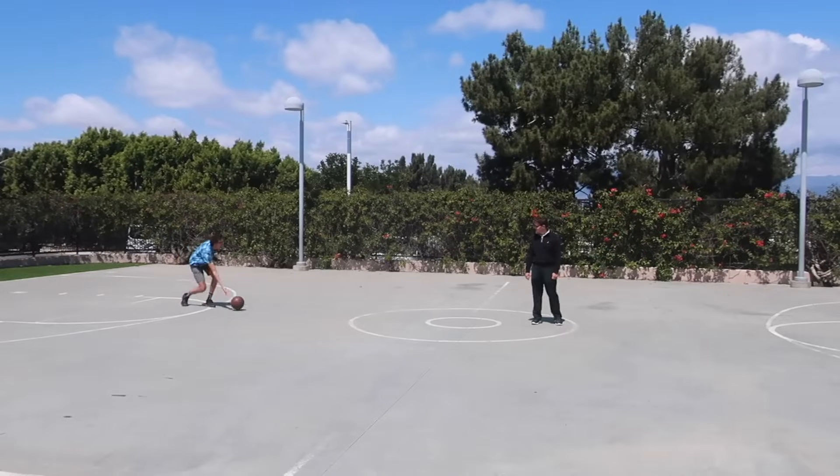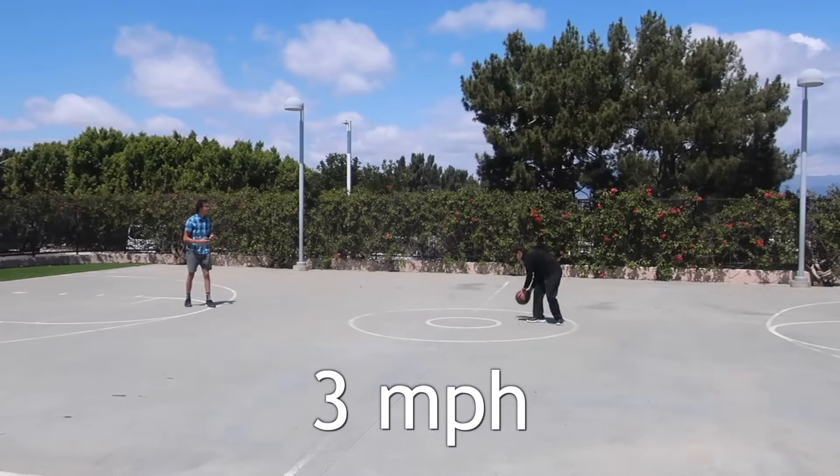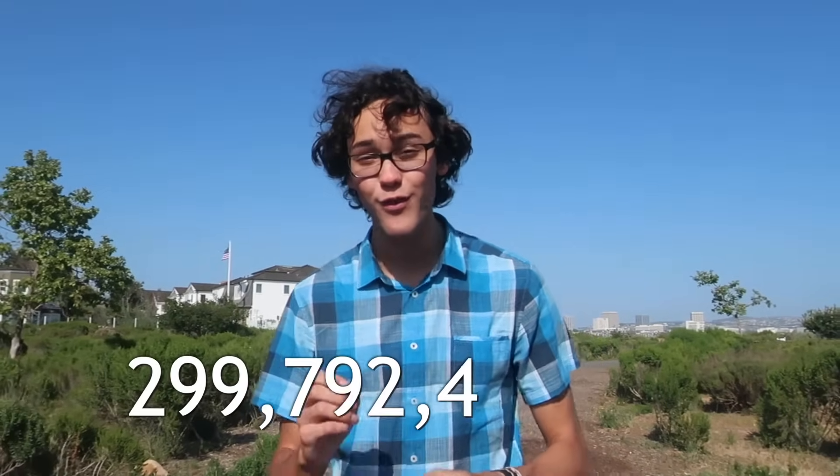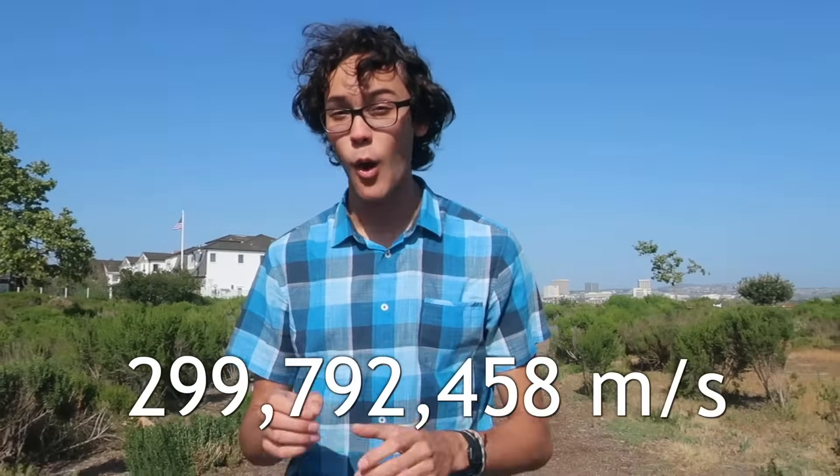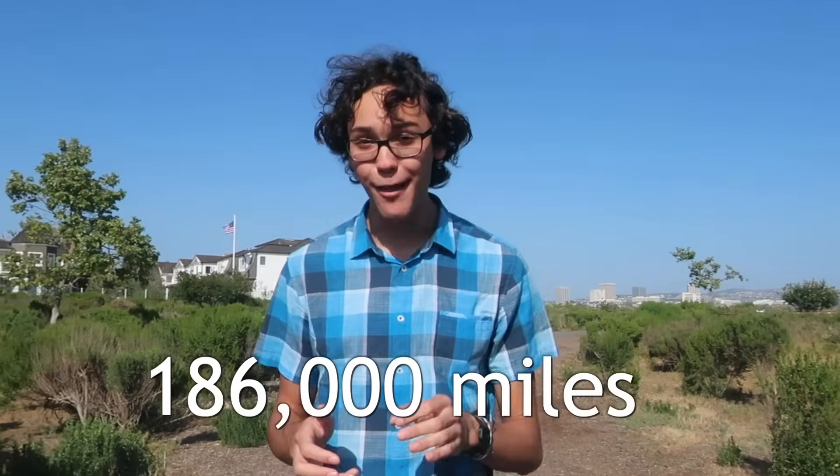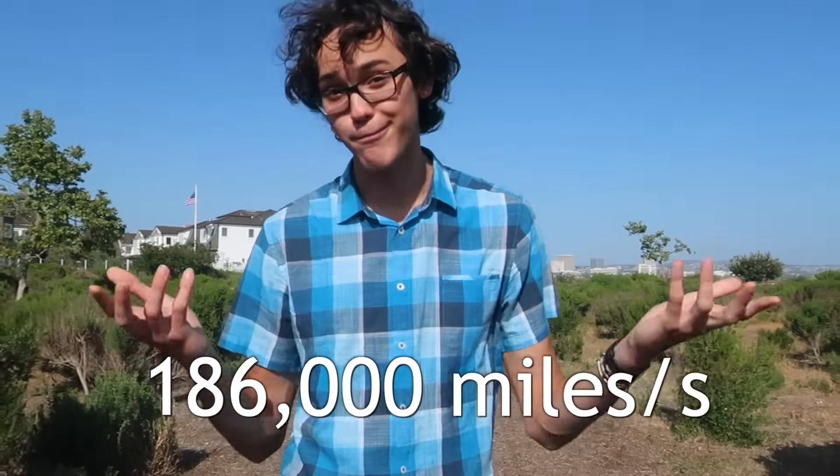When a satellite broadcasts a signal, it sends information about which satellite it is, where it is, and the time that the signal was sent. But what about the speed of the signal? Well, all radio waves travel at the same speed, the speed of light, which we have measured and defined to be exactly 299,792,458 meters per second, or about 186,000 miles per second. So yeah, pretty fast.